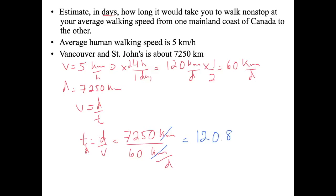That equals 120.8 days. Converting the 0.8 days to hours: 0.8 days times 24 hours per day gives about 19.2 hours. So the answer is approximately 120 days and about 19 hours.